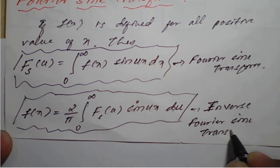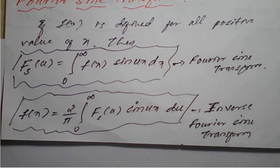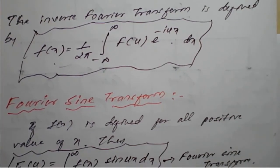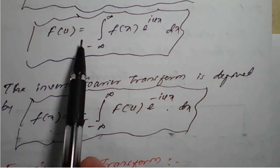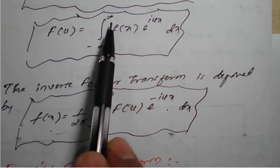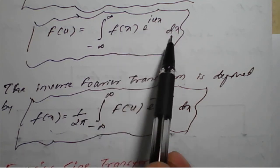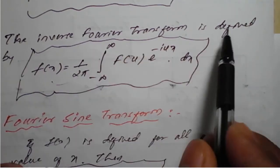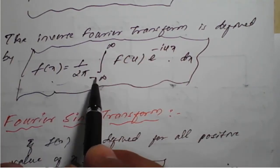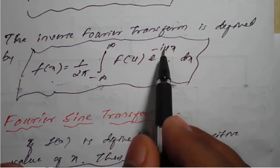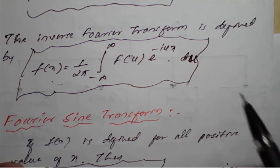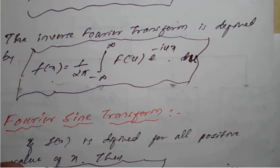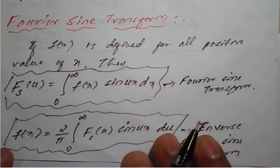One more thing we need to remember: the Fourier transform is given by F of u equal to the integration from minus infinity to plus infinity of f of x, e raised to i u x, into dx. The inverse Fourier transform is f of x equal to 1 upon 2 pi, integration from minus infinity to plus infinity, F of u, e raised to minus i u x, into du. This completes the first part — the Fourier sine transform.